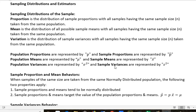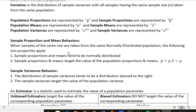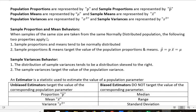Sample proportion and mean behaviors: When samples of the same size are taken from the same normally distributed population, the following two properties apply. The sample proportions and means tend to be normally distributed. So if your population had a normal distribution, then you would expect your proportion and mean from your samples to also be normally distributed.